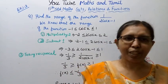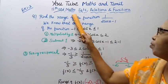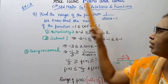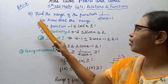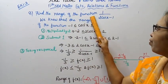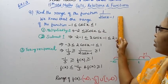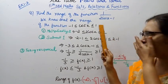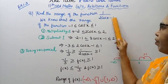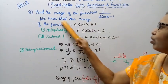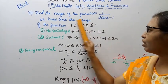Hello students, welcome to Max and Tamil channel. 11th standard Maths, Relations and Functions, Exercise 1.3, sum 8. Find the range of the function 1/(2cos x - 1). We know that the range of the function — let's find the minimum range.